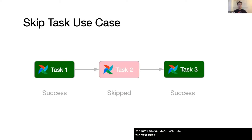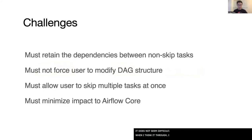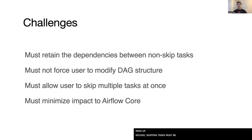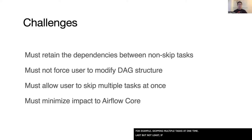The first time I was asked this question, I thought, well, sure, it doesn't seem difficult. But when I think it through, I realized there are some challenges. When a user asks about skip tasks, there are some assumptions. First, the dependencies between non-skipped tasks must be retained, so your DAG wouldn't just mess up. Second, skipping tasks must be lightweight — it won't force users to modify the DAG. Third, skipping tasks should be easy, for example, skipping multiple tasks at one time. Last but not least, if this is going to be a new feature, we definitely want to contribute back to Apache Airflow.